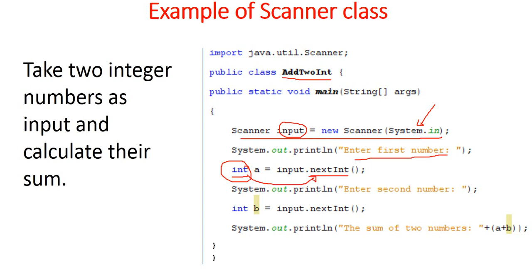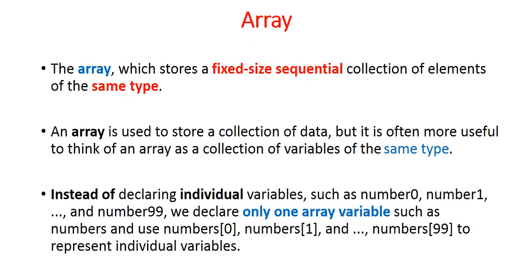Then another message prompts the user to input the second number, stored in variable 'b' using input.nextInt(). We then calculate and print the sum of a and b. For example, if the user inputs 5 and 4, the result should be 9. This is how we use Scanner class. Please practice this by yourself so you can understand it better.